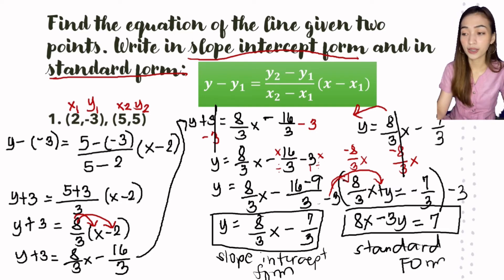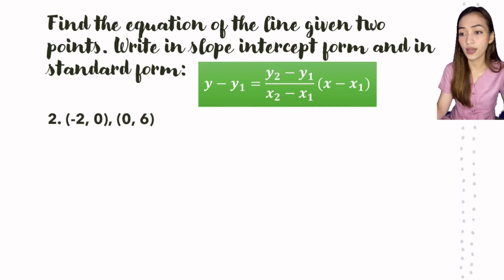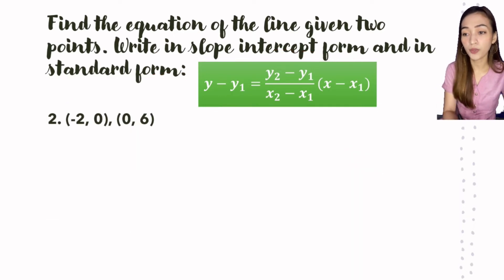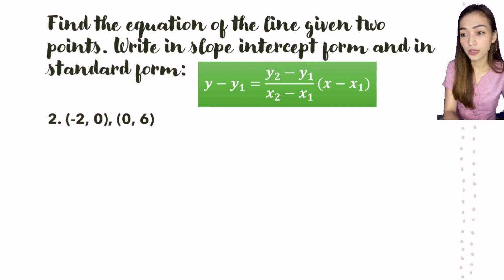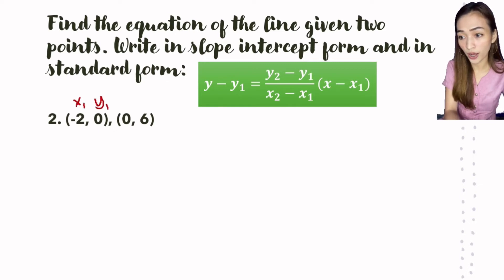Alright, next we have number 2. We have the given two points: (-2, 0) and (0, 6). So x-sub-1 is -2, y-sub-1 is 0, x-sub-2 is 0, and y-sub-2 is 6.